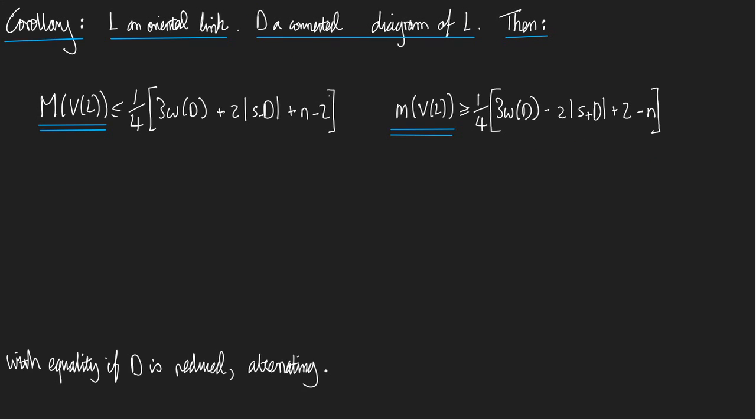You know what w(D) is. That's the writhe. What is this quantity? Well, you know that bar of a state applied to a diagram equals number of components in S minus D. And S minus D, that's the smoothing according to S minus. What is S minus? S minus is the state with all minus ones. In other words, it's the state that assigns sine minus one to every crossing in D. So we learned about this in a previous video, how to compute and understand these quantities.